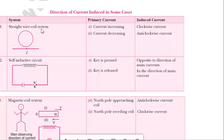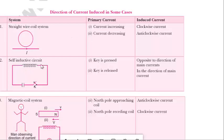Next we are representing the direction of induced current. If we are considering a straight wire and coil system — a straight wire through which current is moving — then how will the direction of induced current be? Initially if the current is increasing, the induced current will be in the clockwise direction, and if the current is decreasing it will be in the anticlockwise direction.